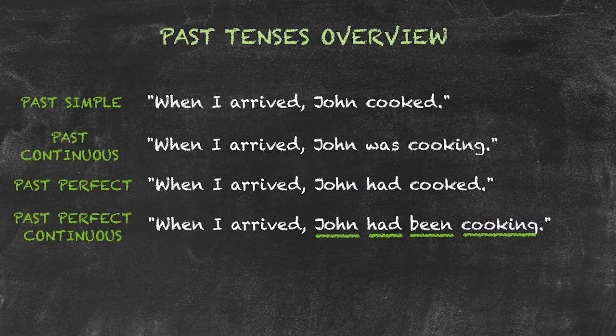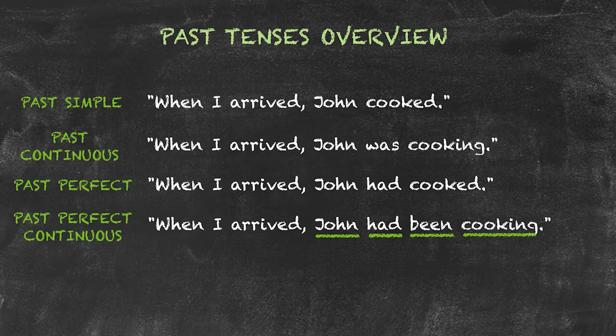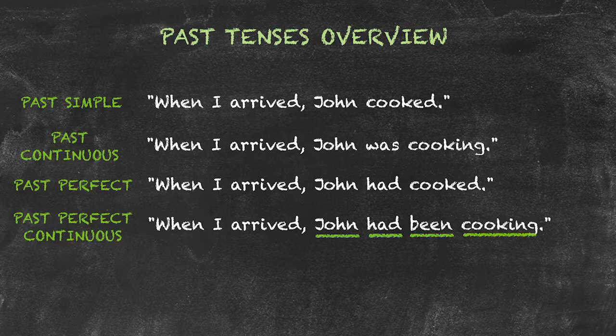The past perfect continuous tense is used to express the duration or continuity of a longer action in the past before another past action. As we can see here, when I arrived, John had been cooking. The cooking had continued for a period of time before I arrived. It doesn't express whether cooking is still continuing or completed.